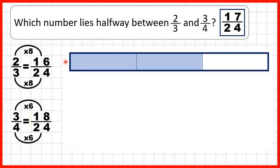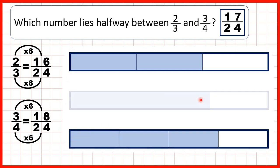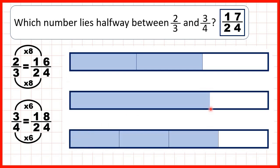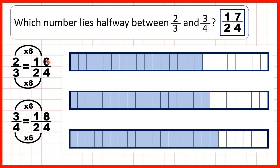We can show the fraction bars for two-thirds and three-quarters, and a fraction bar right in the middle. That's seventeen over twenty-four, and the way we worked it out was by changing two-thirds into sixteen over twenty-four and three-quarters into eighteen over twenty-four, so we could see that seventeen over twenty-four must be right in the middle, or halfway between those fractions.